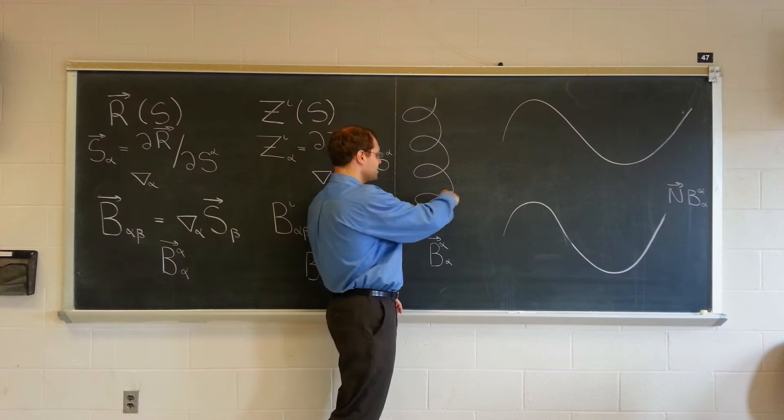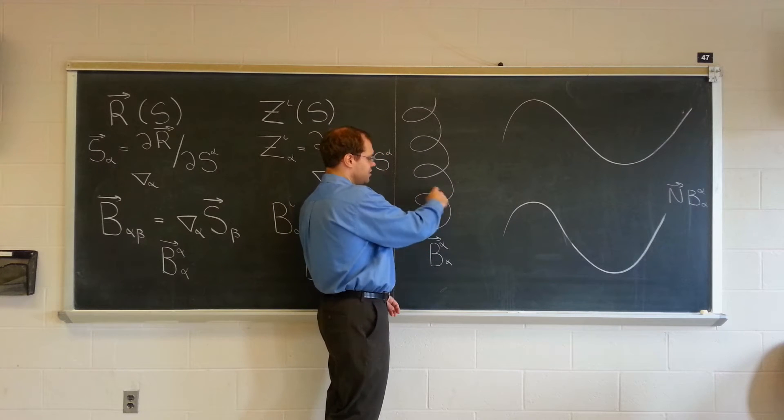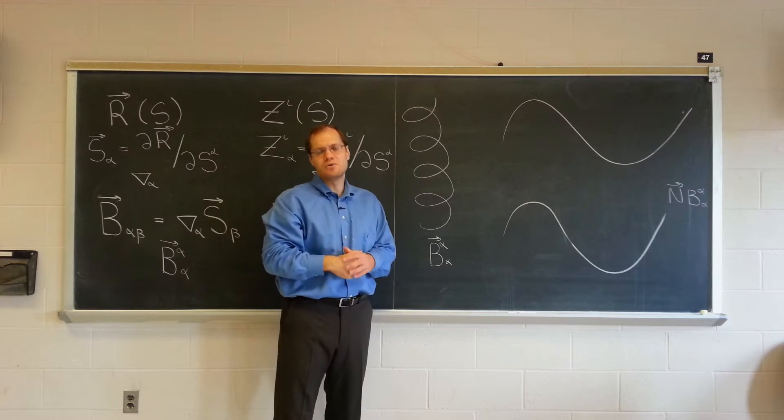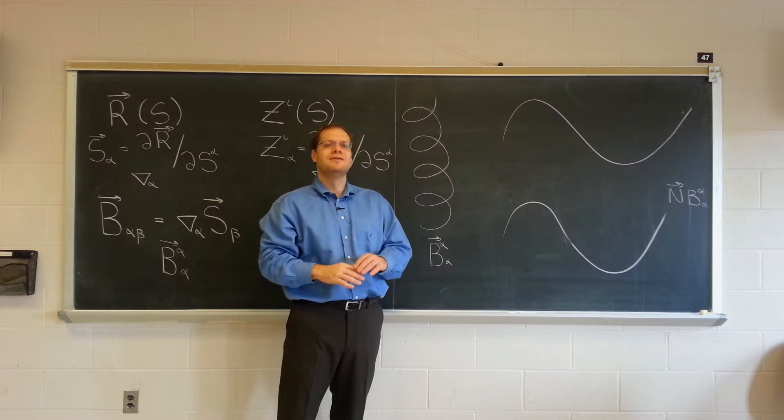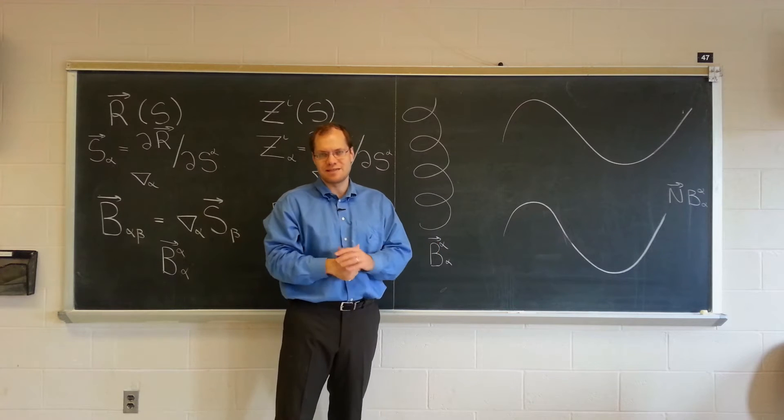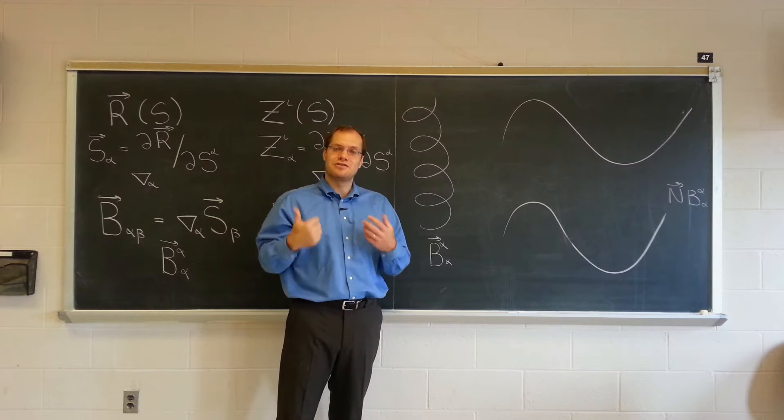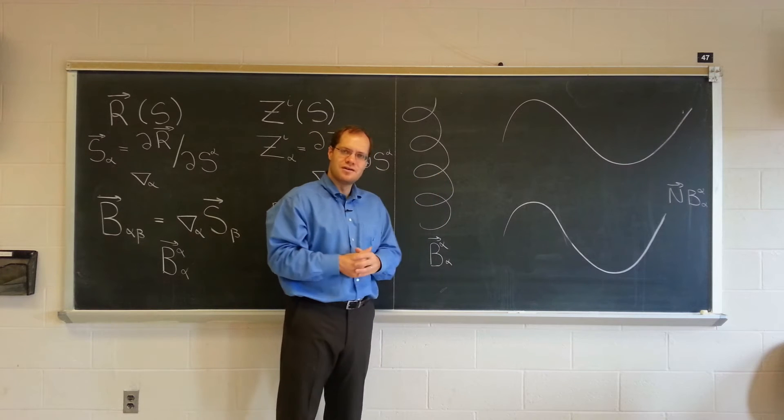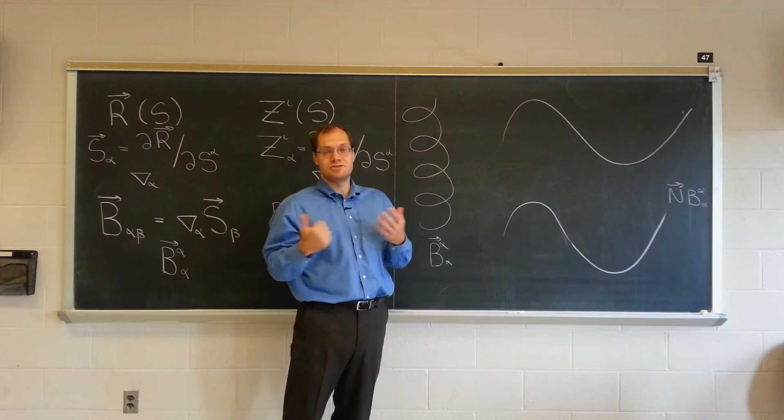But imagine there is some coordinate system that starts at zero here and increases, and let's assume that it's uniform. We could even say that it's arc length, but let's not say that it's arc length because that would be against the spirit of tensor calculus to pick a particular coordinate system, really a Cartesian coordinate system on the curve, to discuss invariant geometric objects.